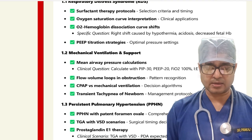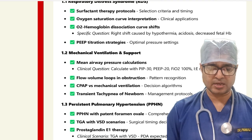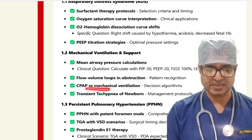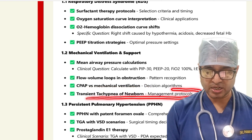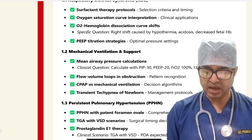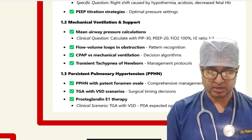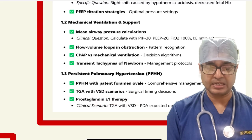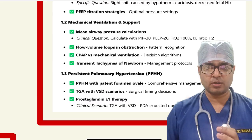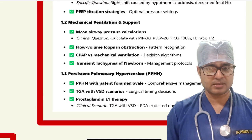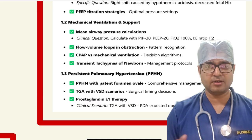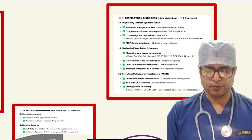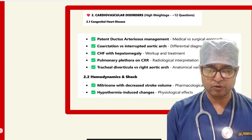For mechanical ventilation, topics include MAP pressure calculation, flow-volume loop in obstructions, and CPAP versus mechanical ventilation. Transient tachypnea of newborn management protocol was asked alongside PPHN — including PPHN with patent foramen ovale, TGA with VSD scenario, and prostaglandin E1 therapy. I'm going fast just to give a glimpse of topics; I will share a PDF containing all the caution patterns asked by examiners. This is also relevant to cardiovascular disorders.